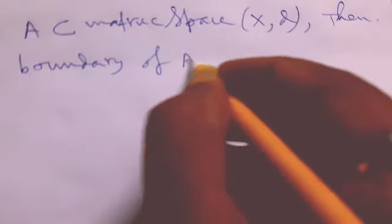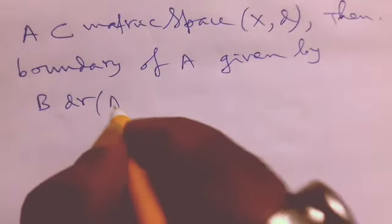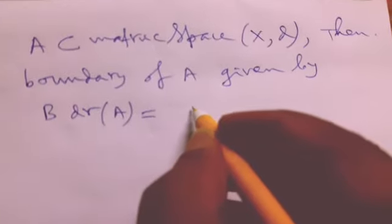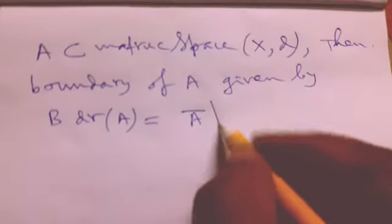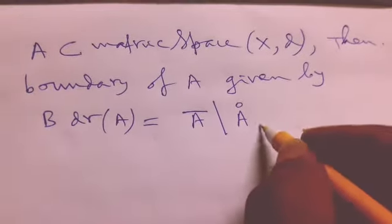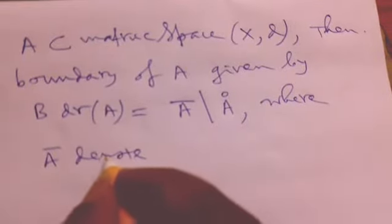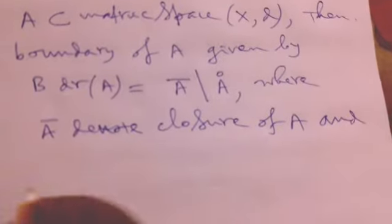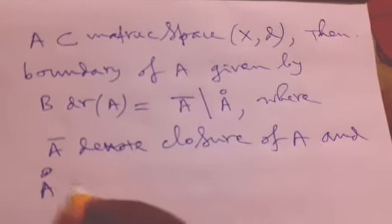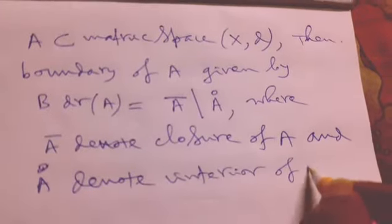The boundary of A is given by: BDR(A) = closure of A (denoted Ā) minus interior of A (denoted A°), where Ā denotes the closure of A and A° denotes the interior of set A.